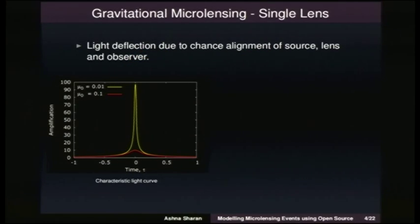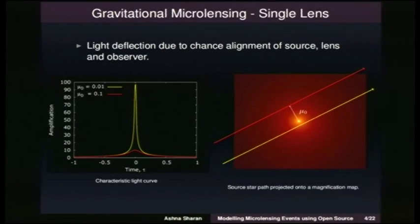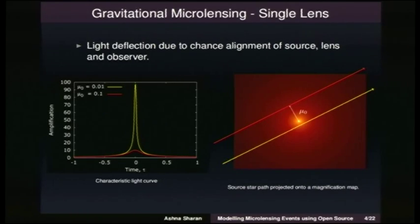Here we have a light curve for a single lens event. Gravitational microlensing, as Martin elaborated on, is light from a distant source bent due to the gravitational potential of a foreground lens object. This is a corresponding magnification map, which I will be talking about more later. As the source star approaches a lens star, you can see a corresponding increase in brightness.